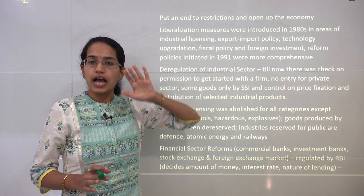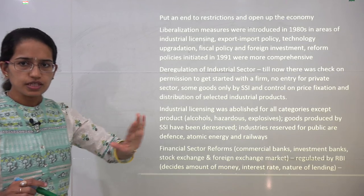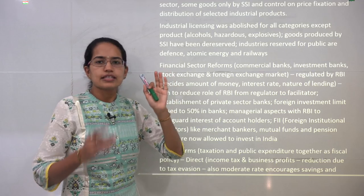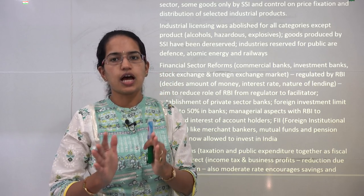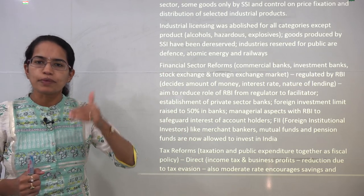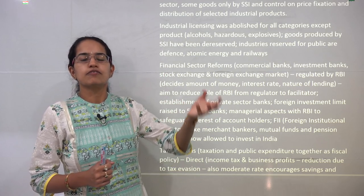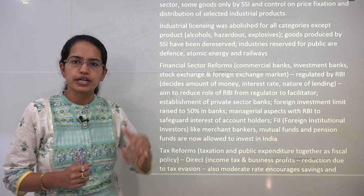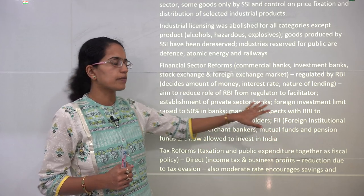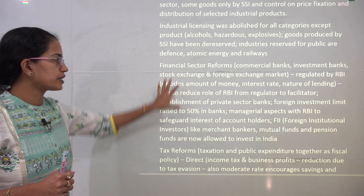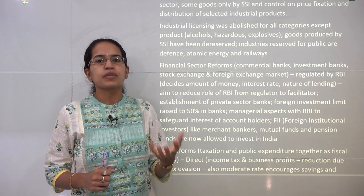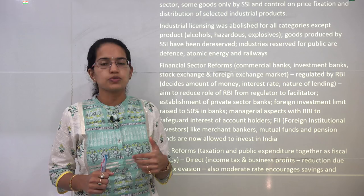The private sector was highly allowed into the industrial sector. Regarding financial reforms, the RBI, which was previously working as a regulator, was now becoming a facilitator. More private sector banks came in, more mutual funds and international investments, and foreign institutional investment (FII) started flowing in. These were the key reforms under the financial sector.